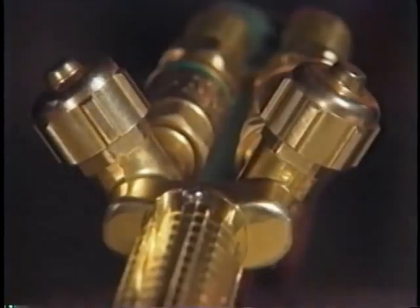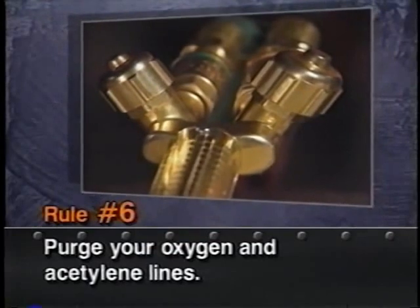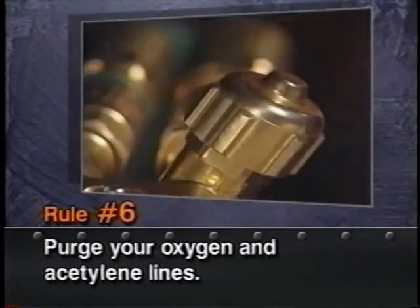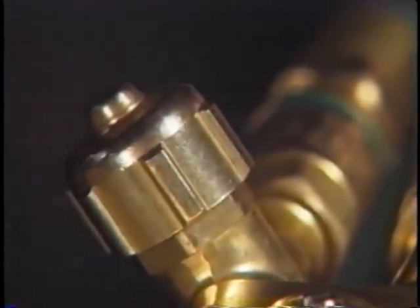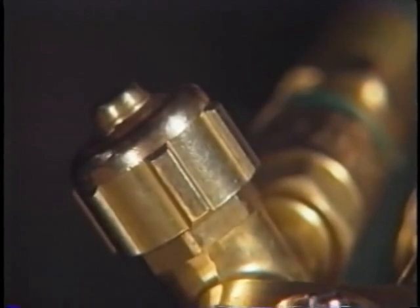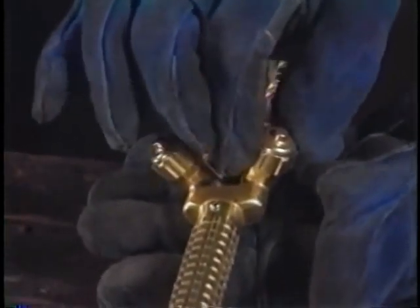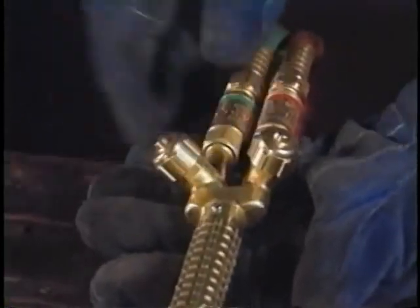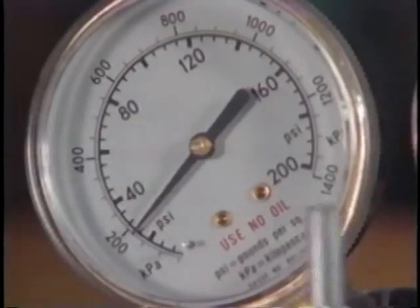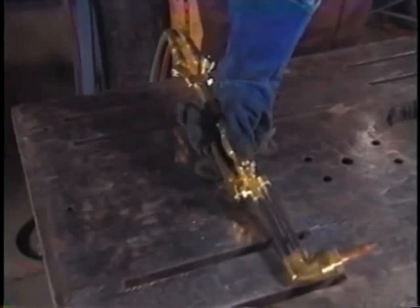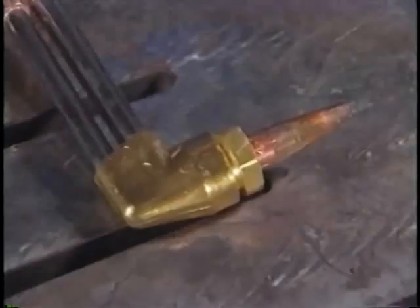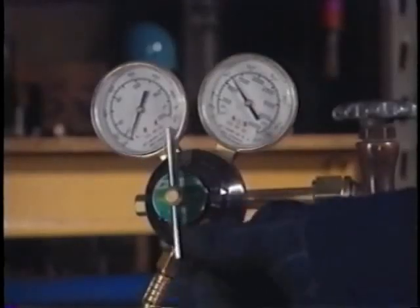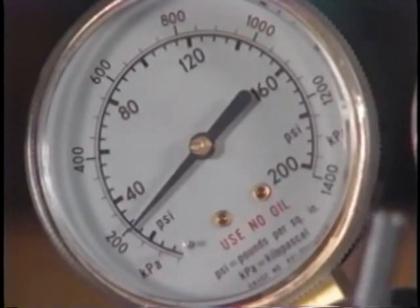Rule number six: purge your oxygen and acetylene gas passages individually before lighting the torch. It doesn't make any difference which you purge first, but it is good practice to have a routine. Start by purging the oxygen first — check that the acetylene valve on the torch is closed, open the oxygen valve and adjust the regulator to the correct operating pressure setting while the oxygen is flowing, then shut the oxygen valve off and repeat the procedure for the acetylene. This gets rid of any foreign gas in either of the regulators and sets your regulator pressure while the gas is actually flowing.